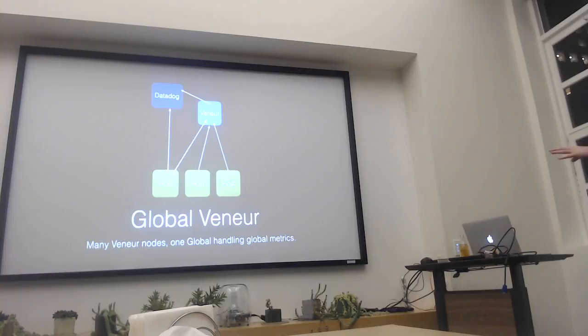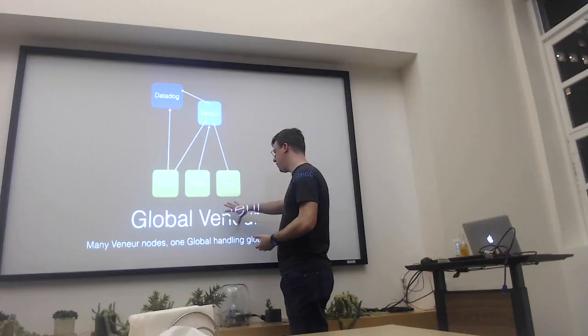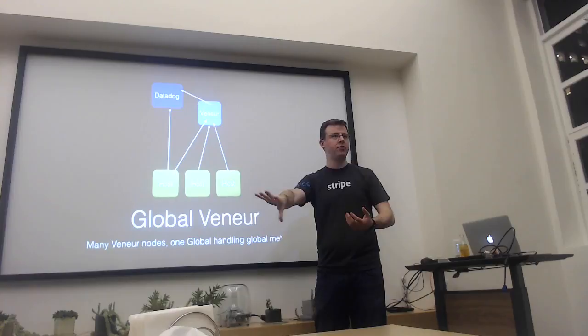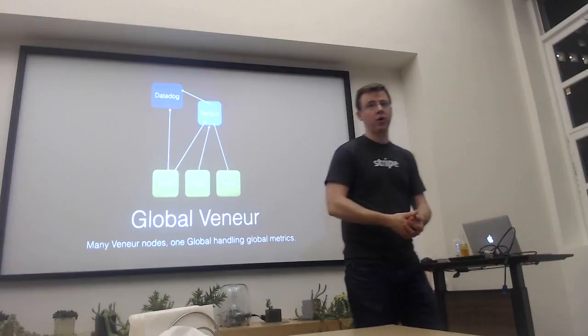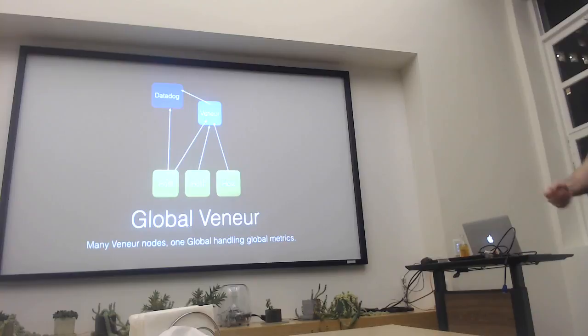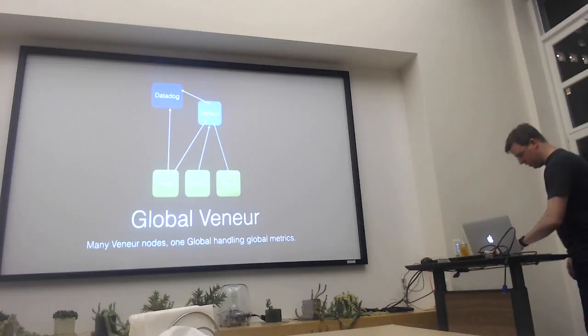This is what Veneur looks like today. We run a Veneur on all the hosts — each of these local Venuers are making their local decision. The host that is sending the metrics, the service that's running, is completely agnostic — it just sprays metrics at the local host. This machine has a Veneur running on it, which either sends the metric to Datadog or it sends the metric to the global Veneur if it's a global metric. So it does this by type: if this is a timer or a set or a histogram, I'm going to send it to the global Veneur; otherwise, I'll just send it to Datadog.